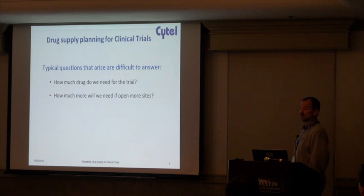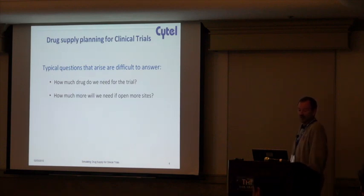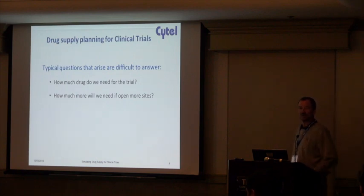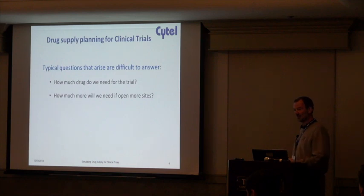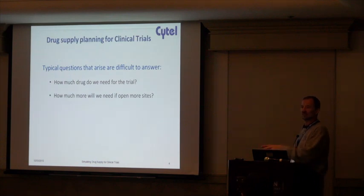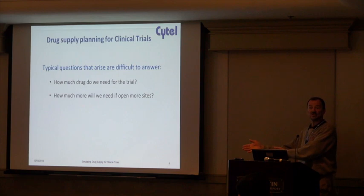The typical questions to address are: how much drug do we need for the trial, and how much more will we need if we open more sites? How does the interplay between the number of sites and the anticipated enrollment rates require us to, in advance, make sure that drug supplies are there so that there aren't any stockouts and we don't have patients waiting with no drug available?